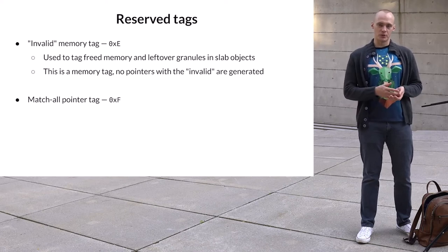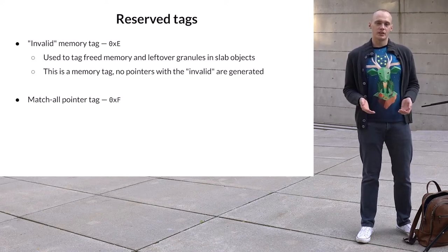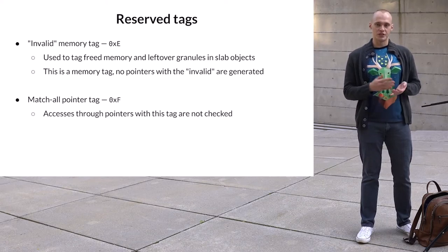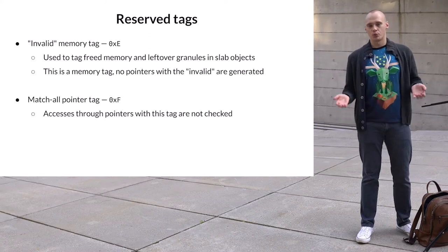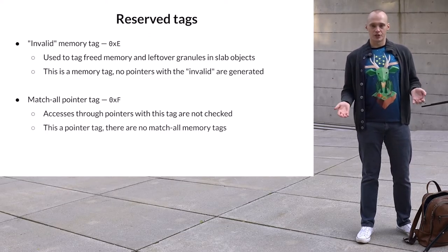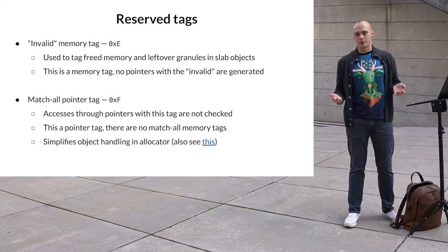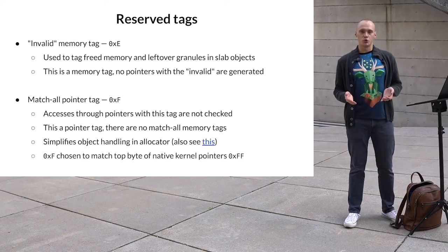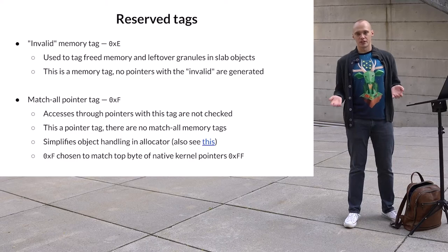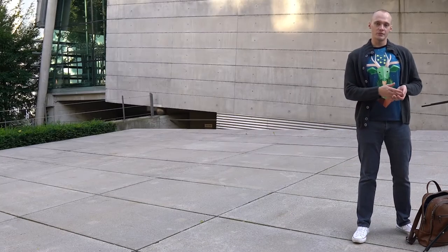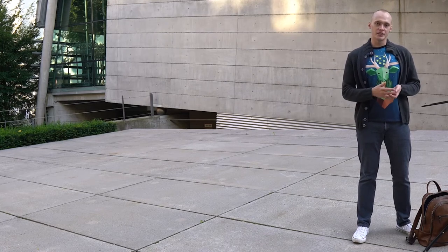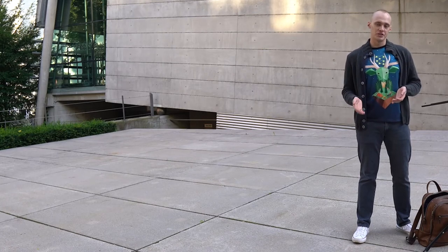F is used as a match-all pointer tag, meaning accesses through pointers with this tag are not checked by the CPU. MTE provides a way for assigning such match-all tags. Note that this is a pointer tag — there are no match-all memory tags. The reason in-kernel MTE uses a match-all tag is because it makes it easier to handle objects in the allocator. The value F is chosen to match the value of the top byte of native kernel pointers, which is FF. And E is the value that precedes it, so that's why it was chosen as the invalid tag. Both E and F are excluded from being generated randomly, meaning there are only 14 random tags left, which slightly affects the chance of in-kernel MTE missing a bug and brings it up to about 7%.